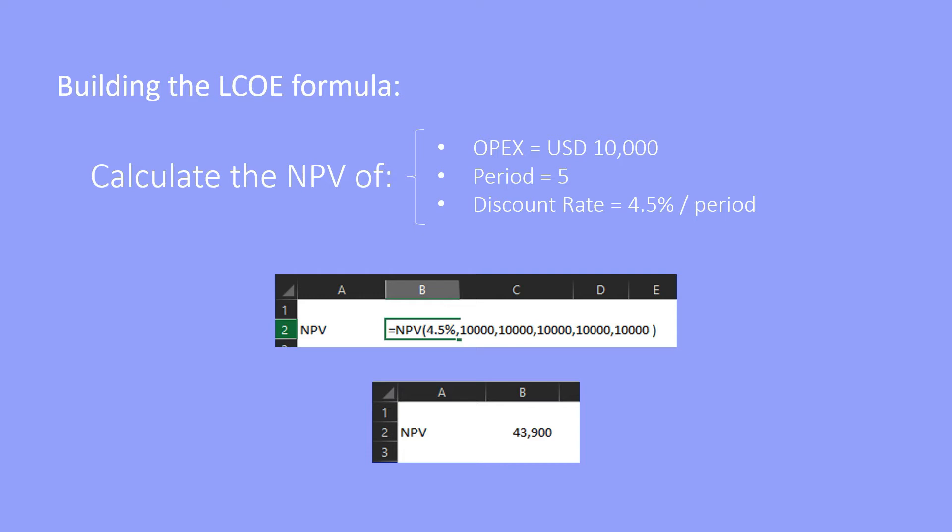For example, if you want to calculate the NPV for a series of OPEX equal to $10,000 for five periods discounted at 4.5% per period, you write that in Excel with $10,000 five times and press Enter, and that should return $43,900.